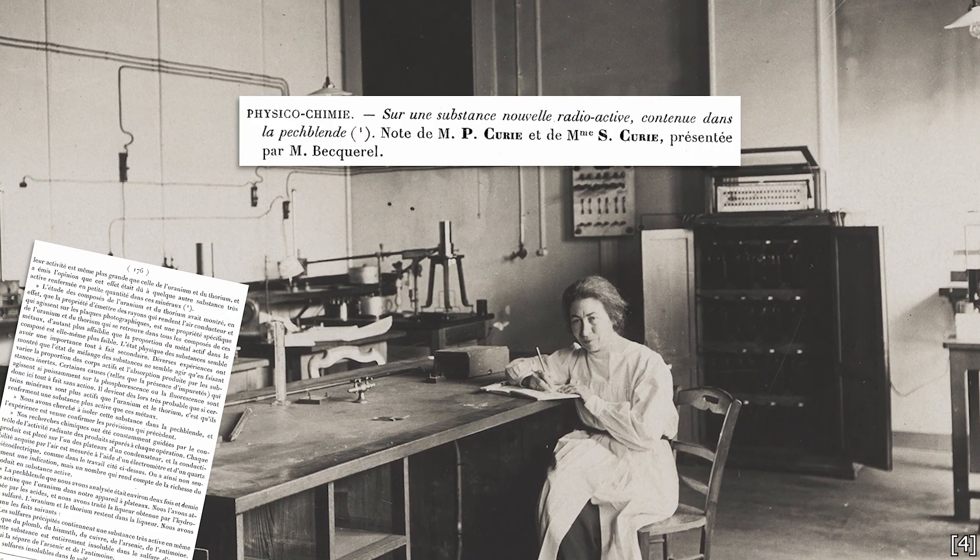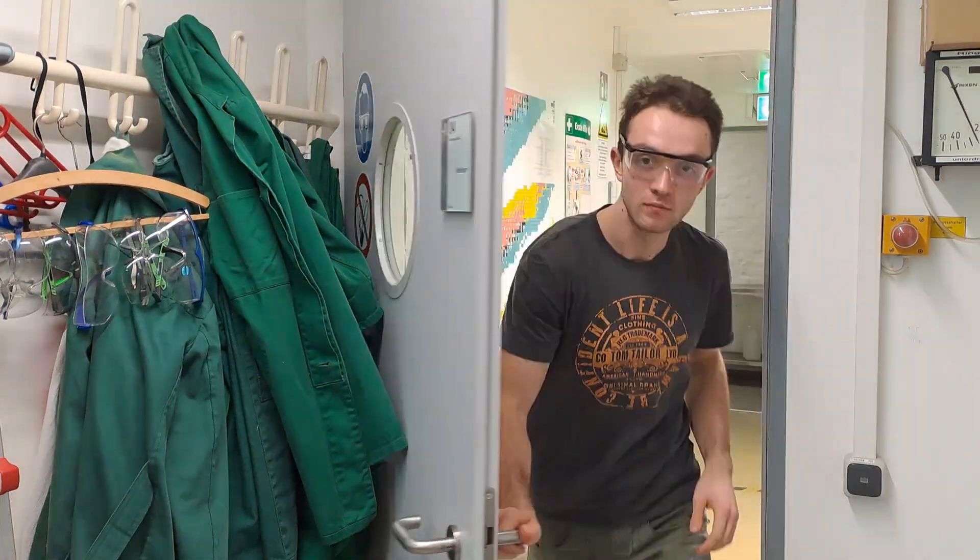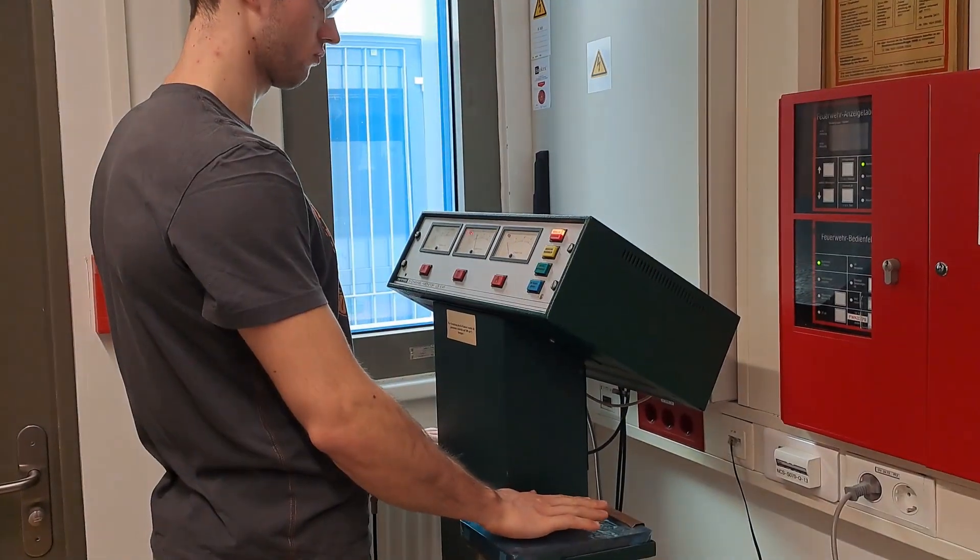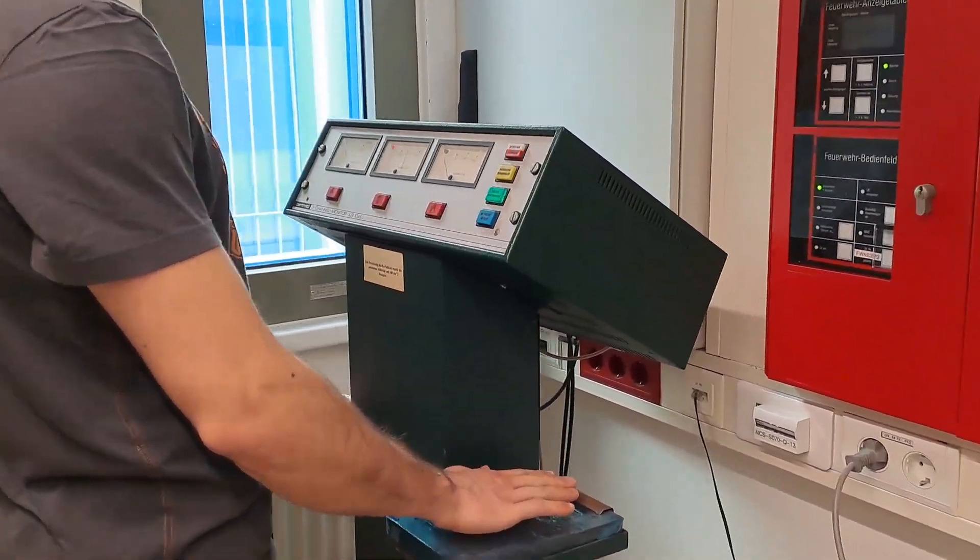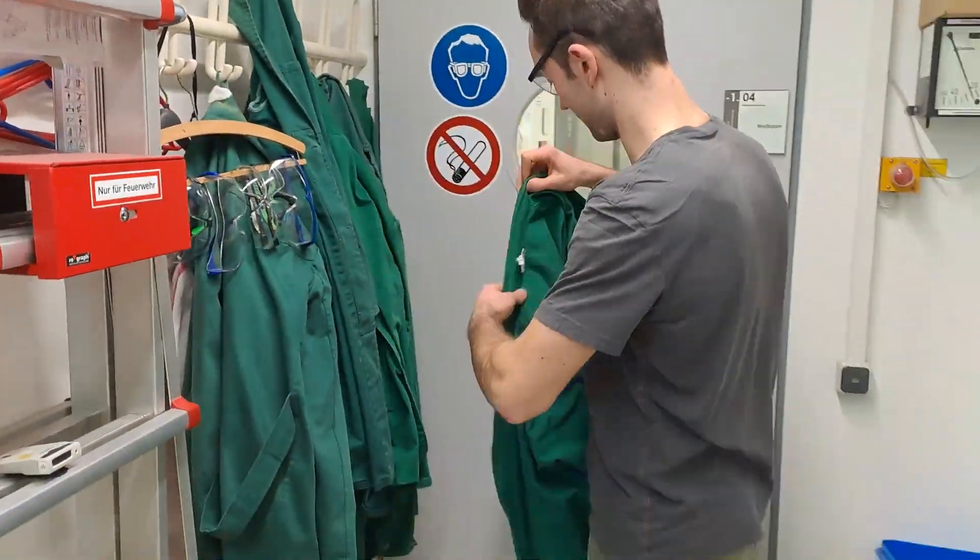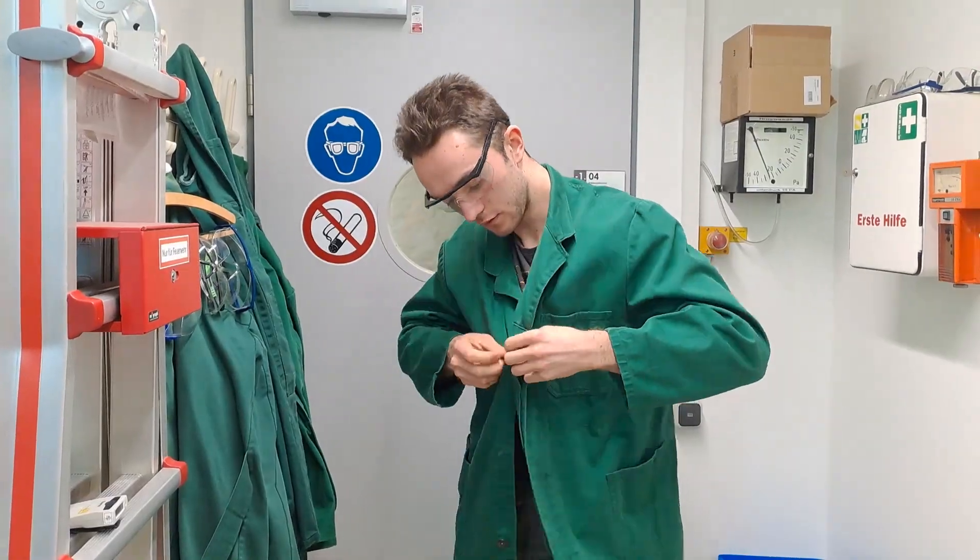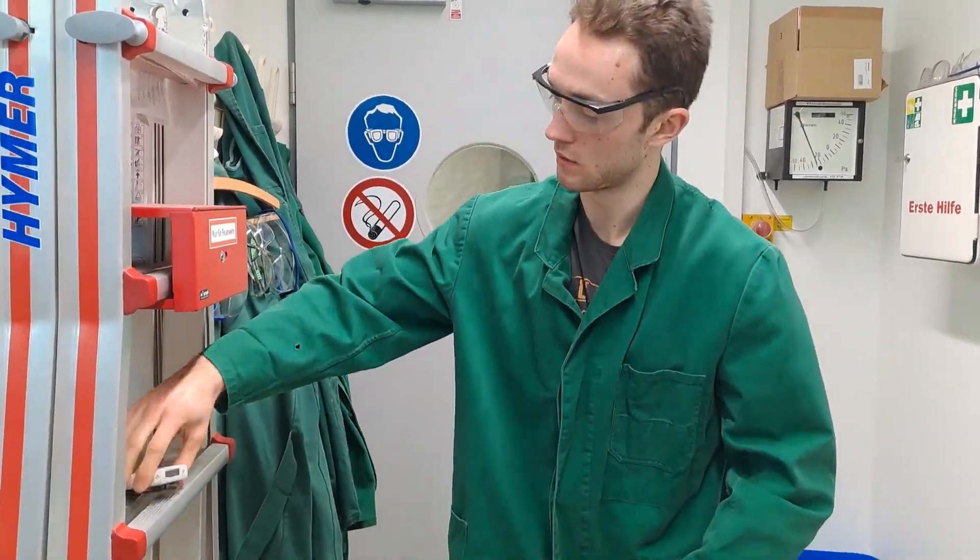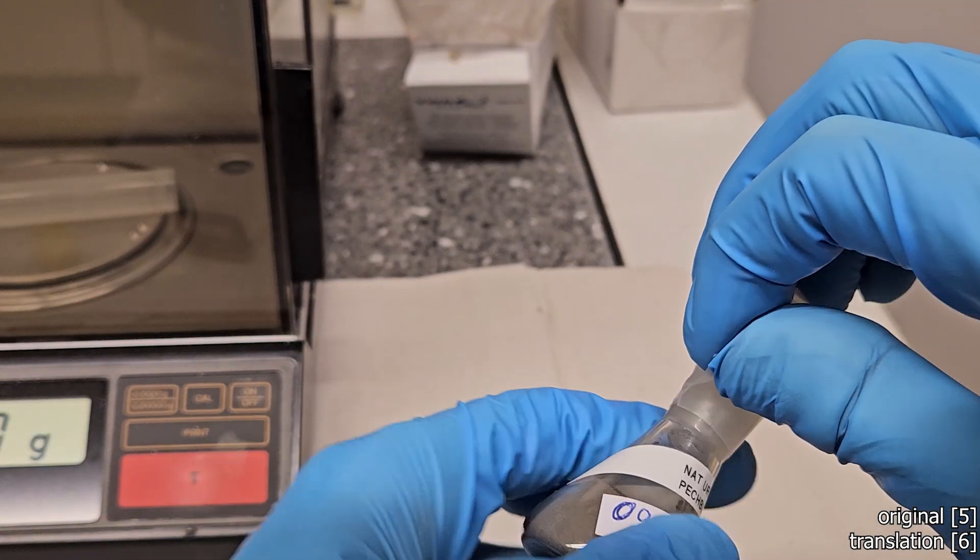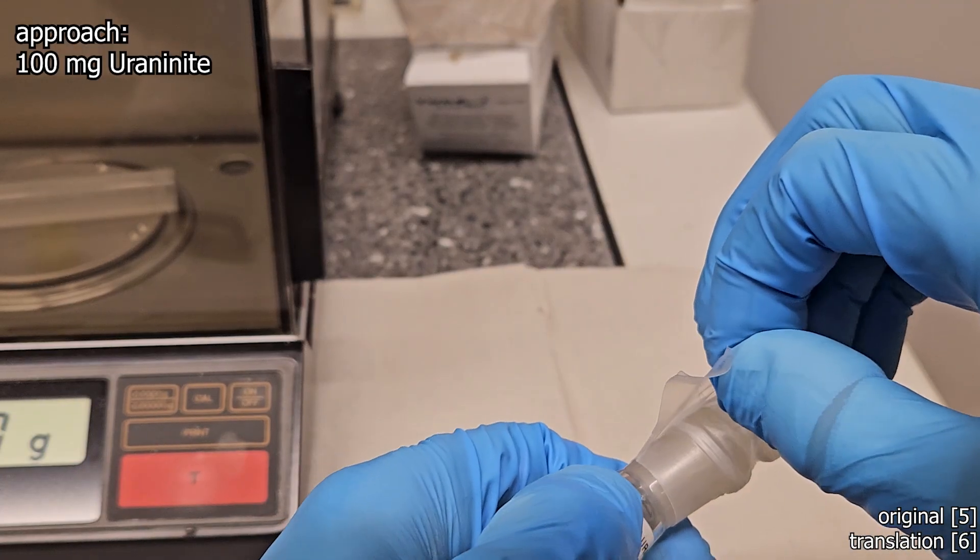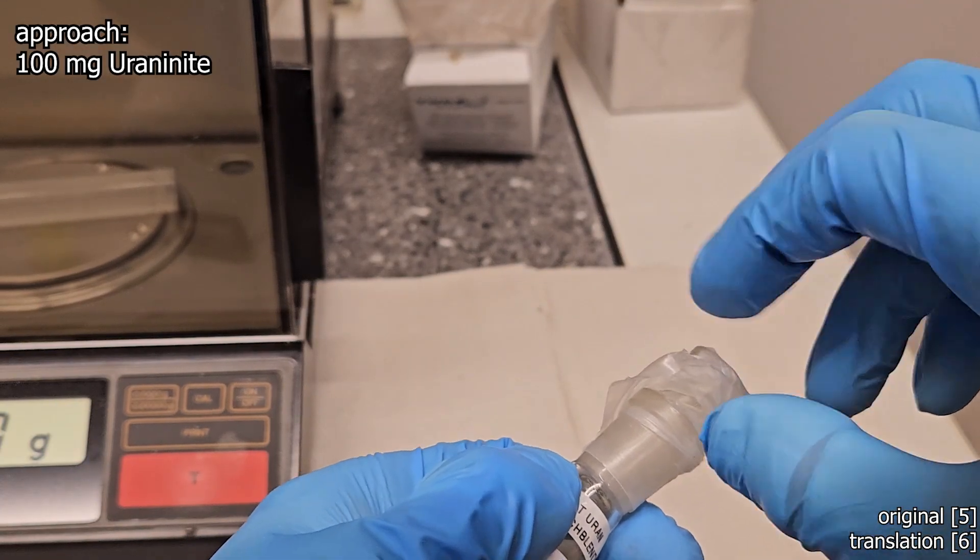One of them is polonium, and today we are going to recreate the method she used back then to isolate this element from pitchblende. For radiation safety reasons, I cannot directly replicate her experiment. The good lady took 100 grams of pitchblende and then later realized she would need a few tons. We are doing this on a milligram scale.